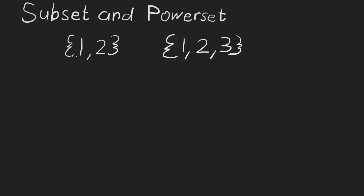Let's say we have the set {1, 2} and also the set {1, 2, 3}. Every element in the first set is also in the second set — 1 is an element in both, and 2 is an element in both. So that means the set {1, 2} is a subset of the set {1, 2, 3}.